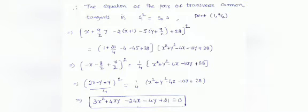The equation of the pair of transverse common tangents is given by S₁² = S₁₁ · S, where S₁ = x·x₁ + y·y₁ − g(x+x₁) − f(y+y₁) + c. Here the point is (1, 9/2), so substituting: x·1 + y·(9/2) − 2(x+1) − 5(y + 9/2) + 28, whole squared.